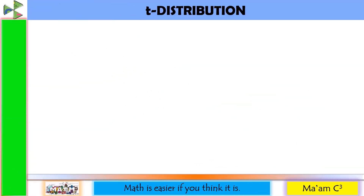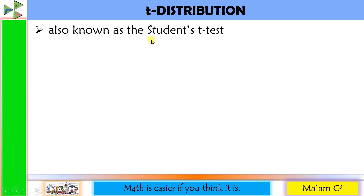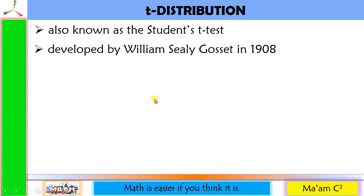Our discussion for today will focus on T-distribution, also known as the Student's T-test. Why 'student'? This is the pen name used by its proponent, William C. Gossett. He developed T-distribution in 1908 while working at Guinness Brewery as a mathematician studying the difference between barley yield. It was not financially practical for the company to have a lot of samples at that time, and this is the reason behind the birth of T-distribution.